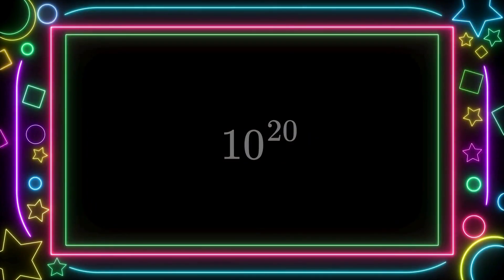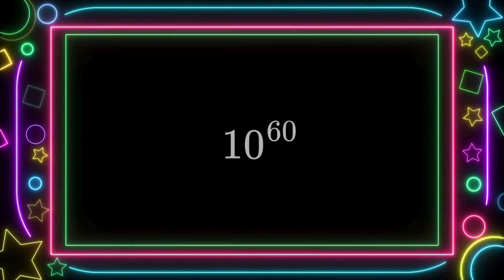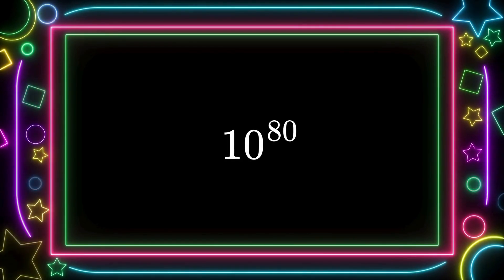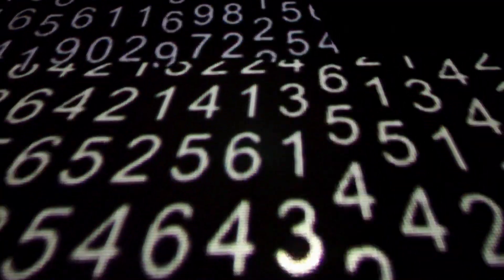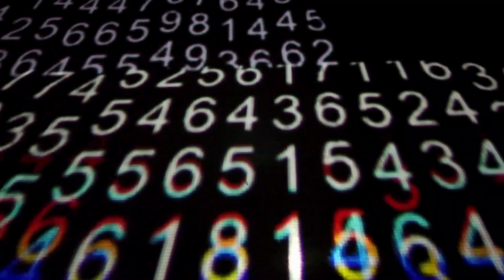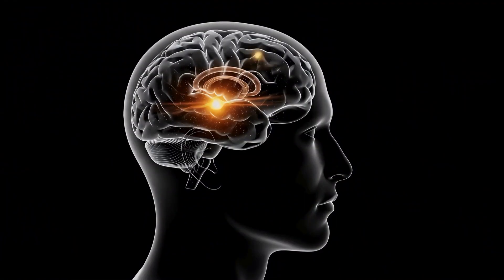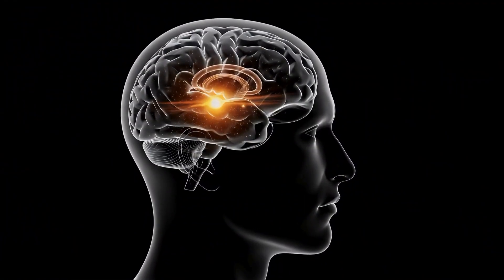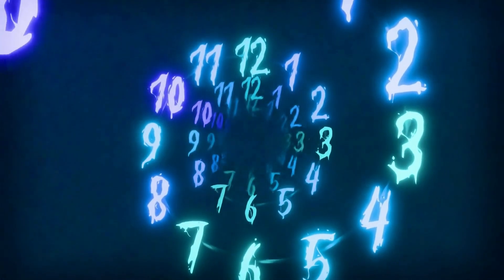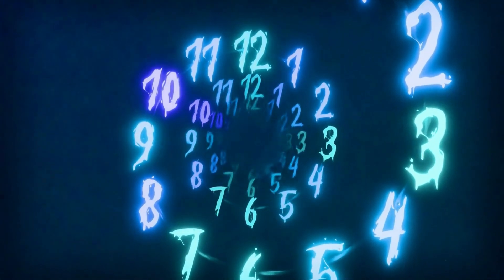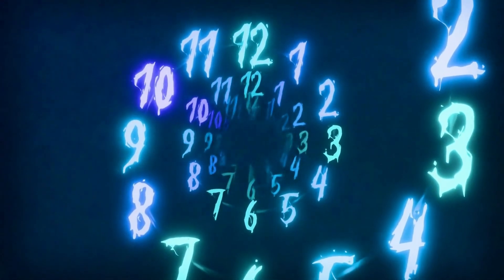And we continue: 10 to the twentieth, 10 to the thirtieth, 10 to the fiftieth, 10 to the sixtieth, 10 to the seventieth, 10 to the eightieth — which is the number of atoms in the observable universe. And that alone is already an absurdly large number. But mathematics doesn't care. And neither do I. So let's increase more.